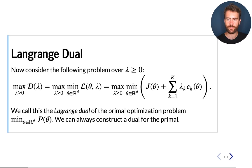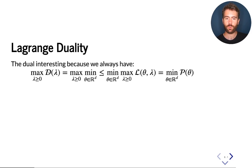Let's look at how the dual is related to the primal. It's easy to show that the dual is always less than or equal to the primal. And in many interesting problems — for example, linear optimization and other kinds of optimization — these two problems are actually equivalent, so to find the minimum we can either solve the primal or the dual. The primal and dual are two equal formulations of the same optimization problem.